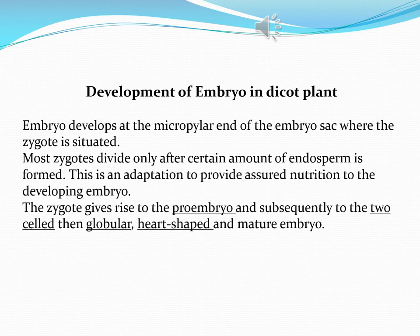The zygote gives rise to a pro-embryo, then a two-cell structure, then a globular structure, then a heart-shaped structure, and finally a fully mature embryo. We must remember this sequence: first the pro-embryo, then two cells, then a globular head structure, then a heart shape, and finally the mature embryo. We will focus on the diagrams in the next slide.